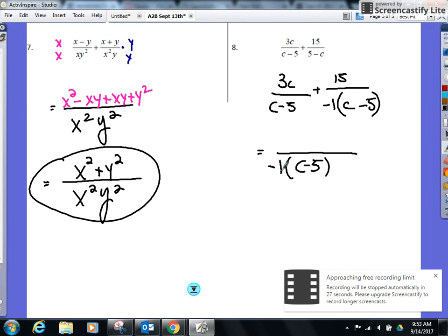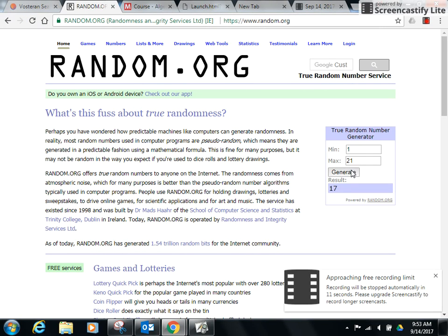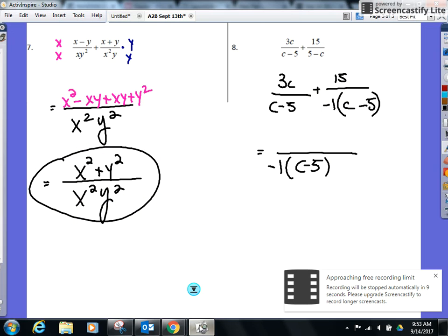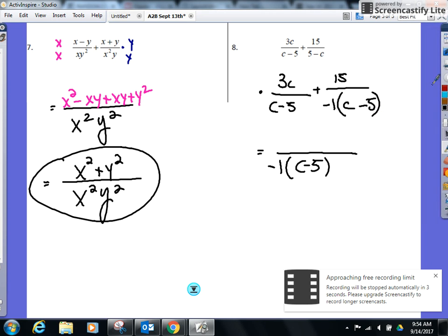When you have opposites, take the negative one out. You'll see right away what should go in your denominator. What do you think I have to multiply this fraction by to make it look like that denominator? What do I have to multiply this denominator to get to that one? Negative one. I got to multiply this top and bottom by negative one.